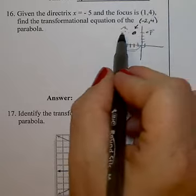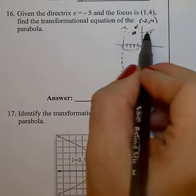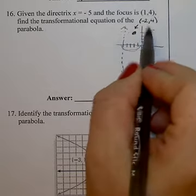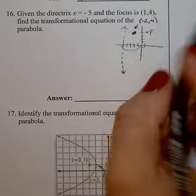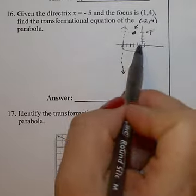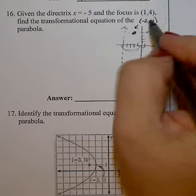So from 5 I go 3 in, and from 1 I go 3 in. And I'm going to land at negative 2, 4. So I have a translated parabola.